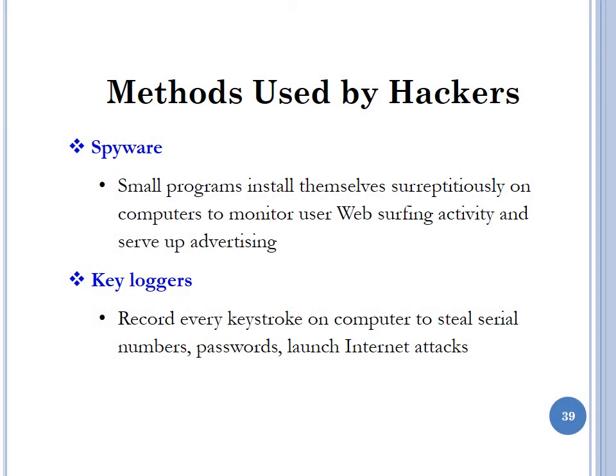Hackers also use spyware — small programs that install themselves on computers to monitor user web surfing activity and serve up advertising. Spyware tracks everything you do on a web page, steals your information, and uses that data to sell to third parties for advertising purposes. Hackers also use key loggers, which record every keystroke done on the computer to steal information such as serial numbers, passwords, or credit card data.